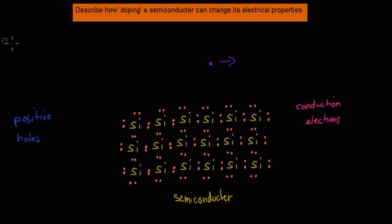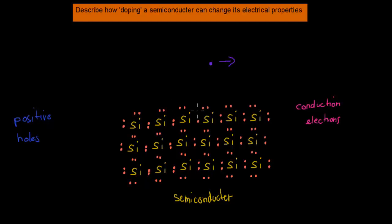So this electron used to be here, moved into the conduction shell and now can conduct electricity. Once it jumps into the conduction shell, it also leaves behind a positive hole. This is where the actual electron used to be — now there's a positive region in the lattice.